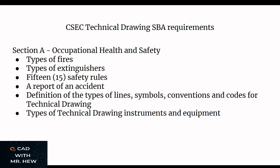The candidate will look at the different types of fire extinguishers, explain them, and illustrate with diagrams. The same applies to the different types of fires — basic diagrams are required. The third item in Section A's occupational health and safety component is a list of 15 safety rules. Having completed that, the candidate will write an accident report — a detailed documentation of an incident.